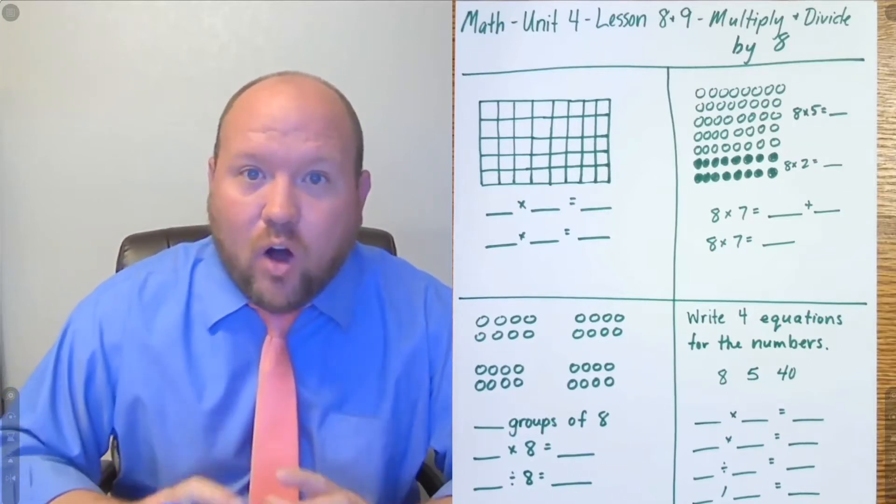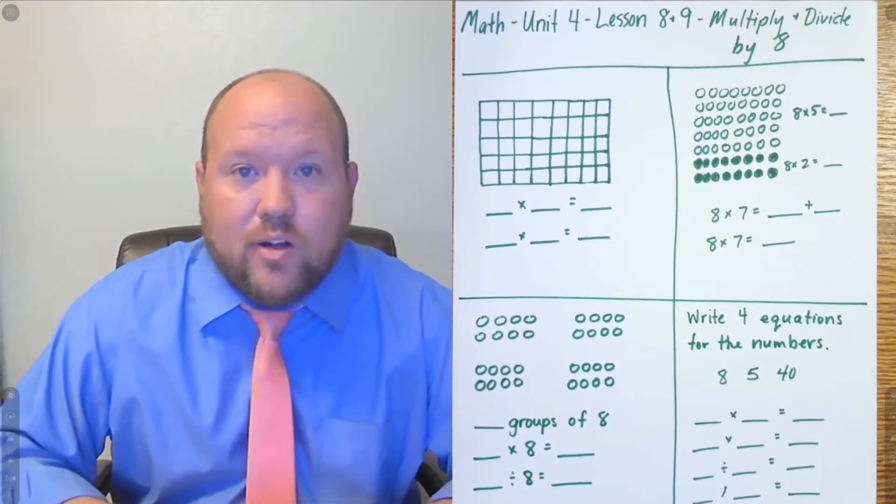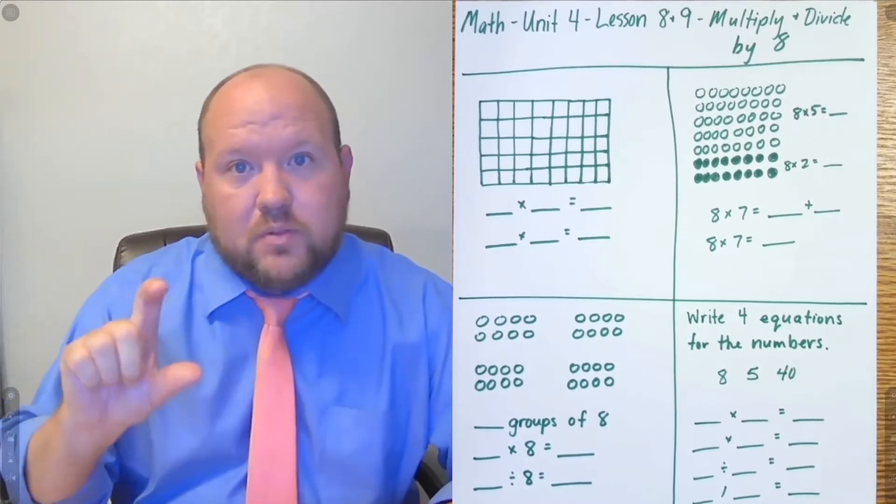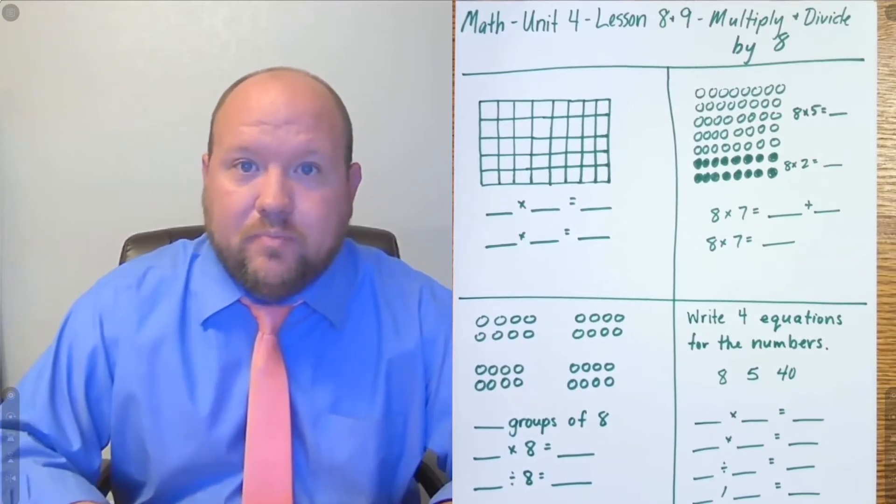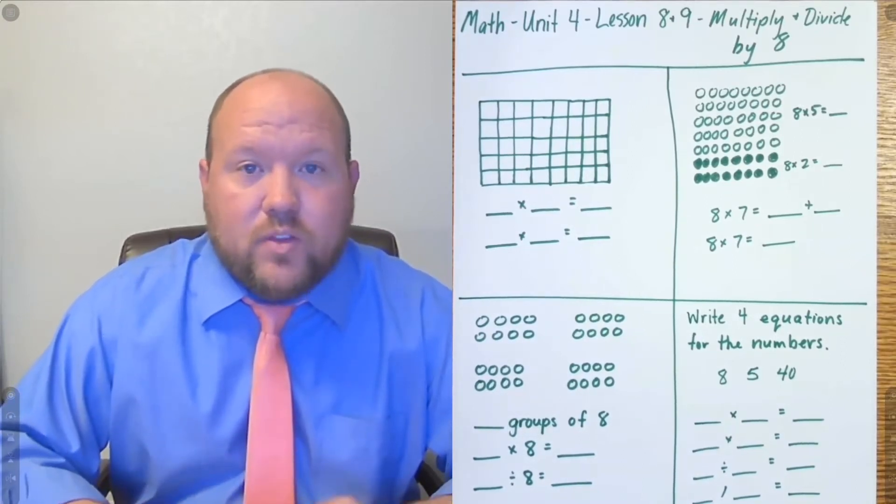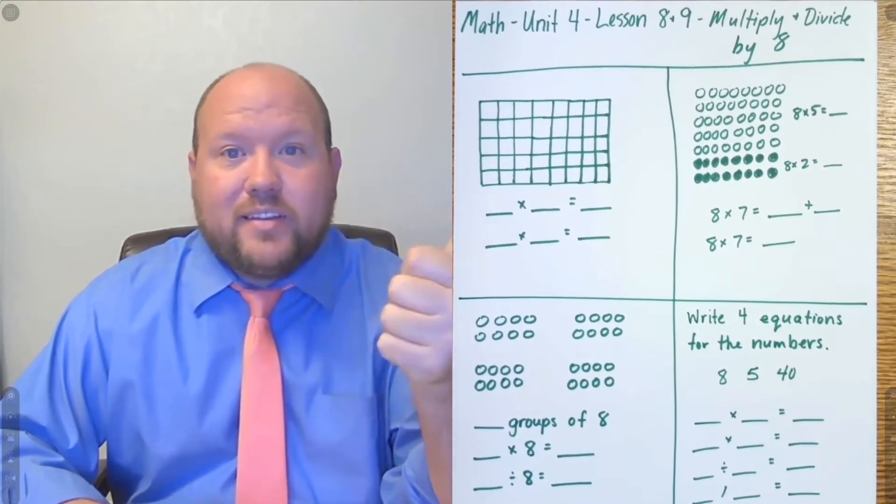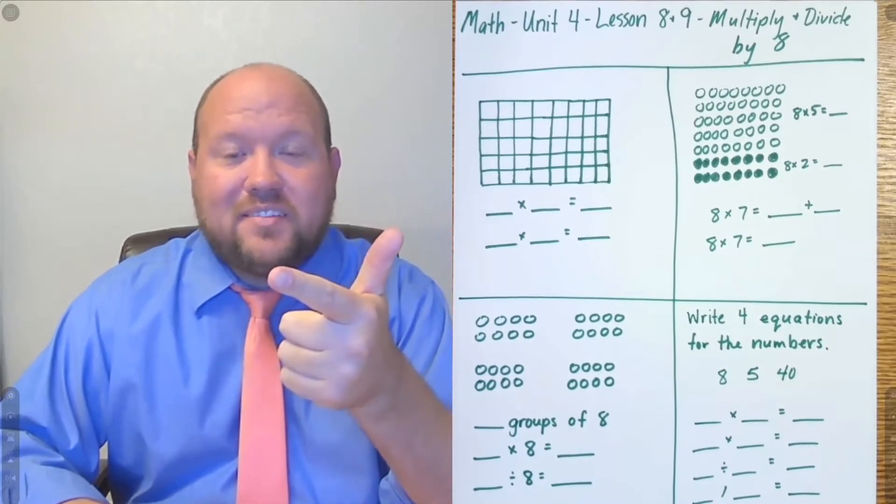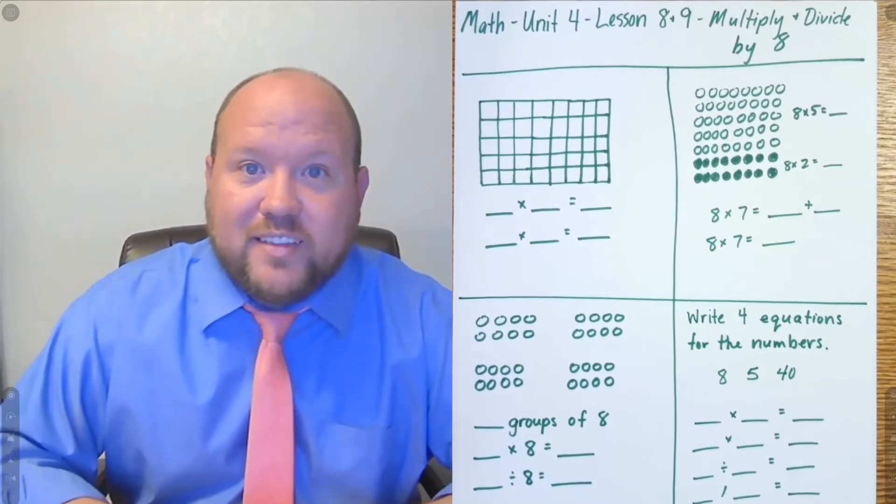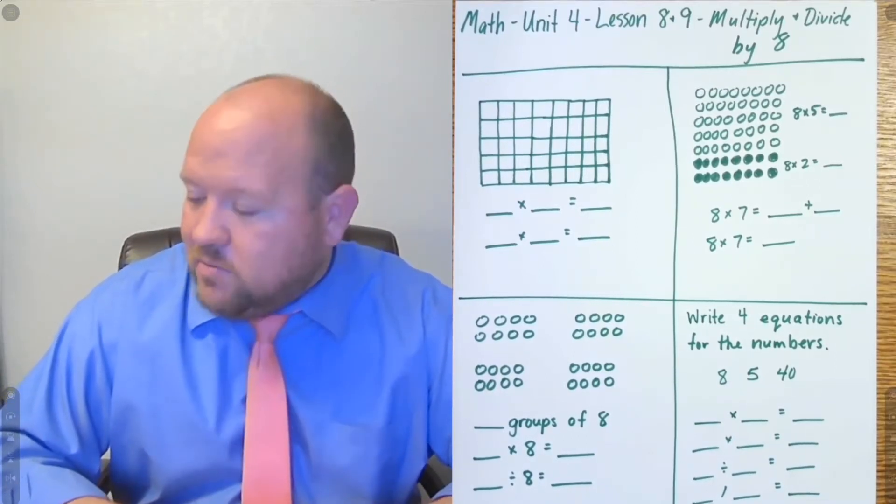Hopefully we're making good progress in the memorization of our multiplication facts and their reciprocal, their opposite with division. And if that's the case, if you now have mastered your 1s through your 7s and 10, you only have two new facts to memorize. You only need to memorize 8 times 8 and 8 times 9. And if you do that, you'll know your 8s. So let's go ahead and begin with that now.